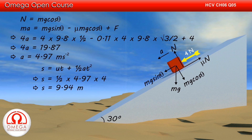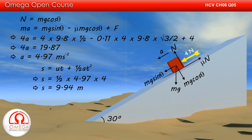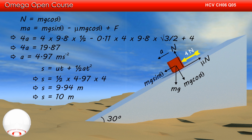Since all the data given in the question is in one significant figure, our answer must also be in one significant figure. Rounding the value to one significant figure, we get displacement is equal to 10 meters. This is our answer.